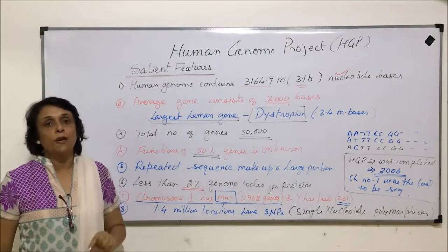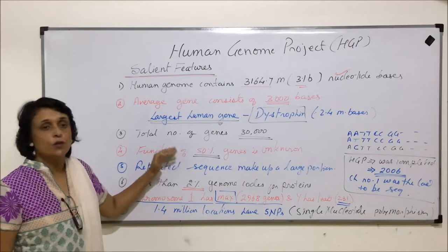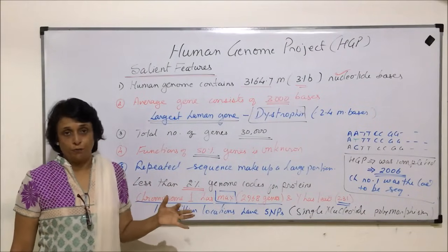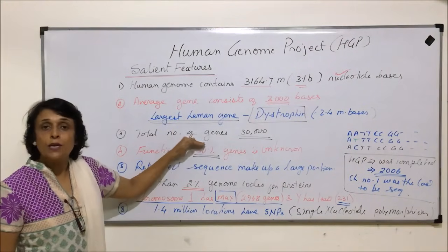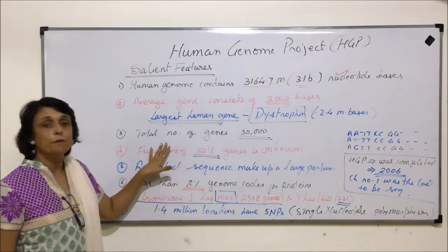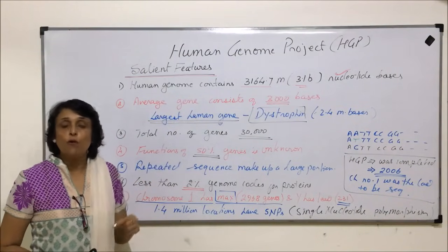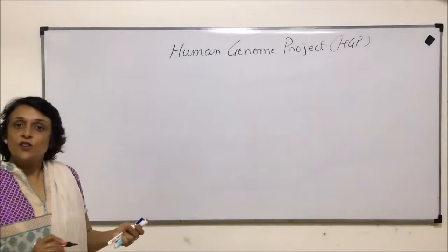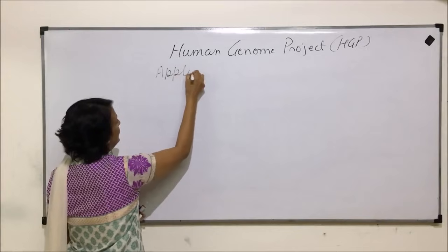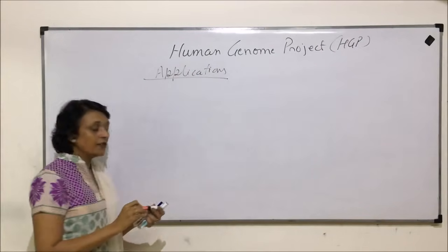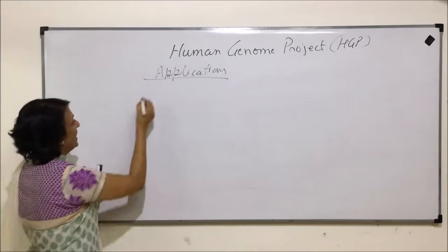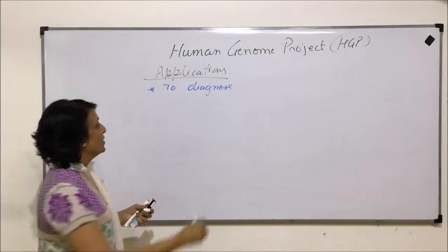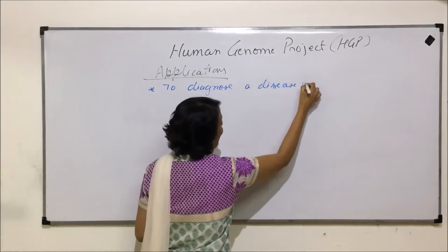The Human Genome Project has been successfully completed, and we now have complete information of all genes and all chromosomes present in our genome. This information can be used for various purposes. Now let us talk about the applications of the Human Genome Project. The most important application is to diagnose a disease and then treat it.